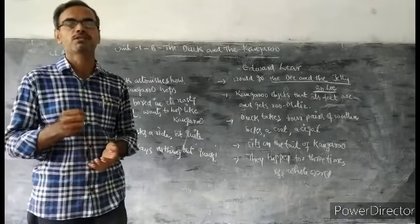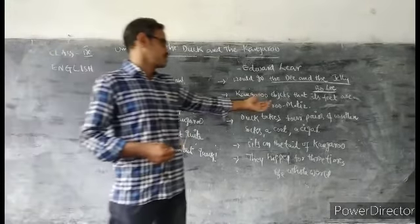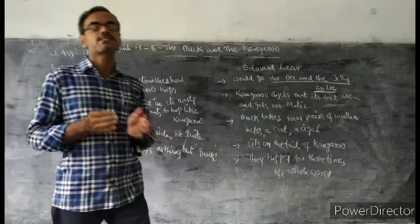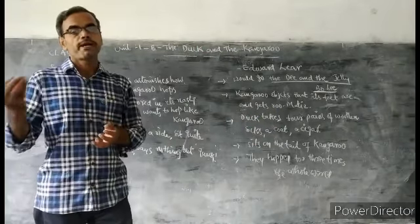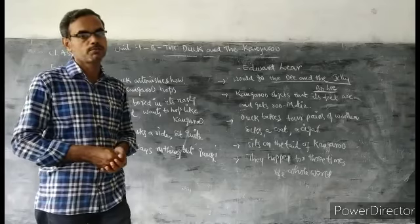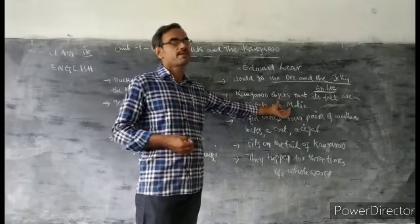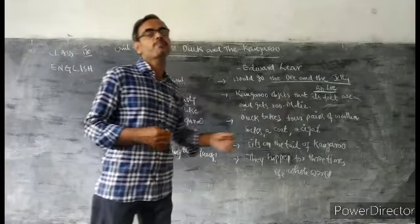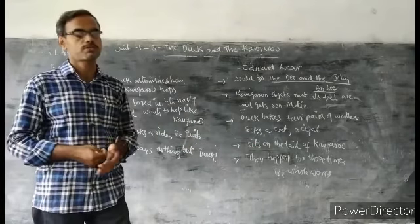So, the kangaroo gets some fear about, by touching the feet of the duck. The kangaroo gets the fear that it gets the rheumatism disease. So, it objects the duck, not to touch it.